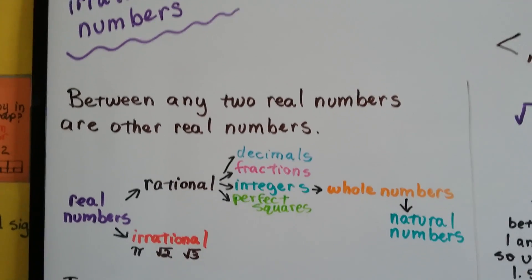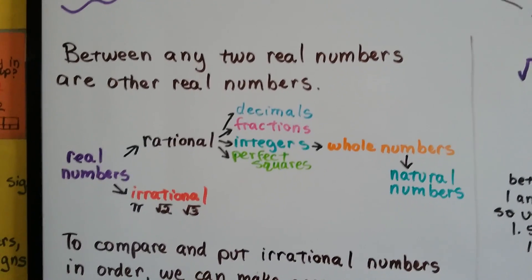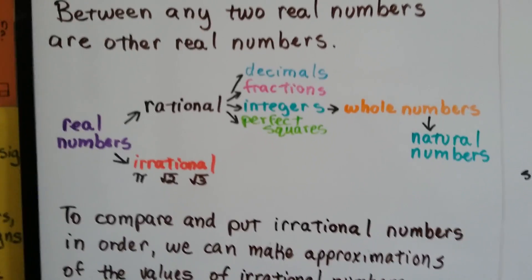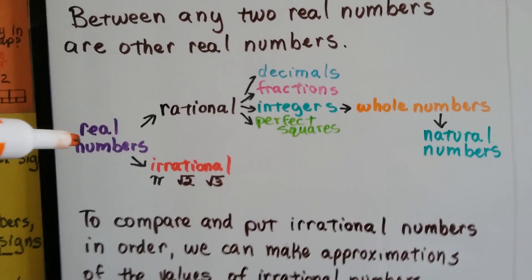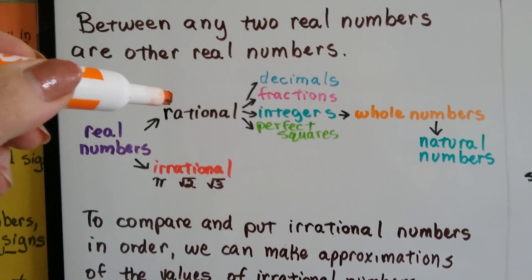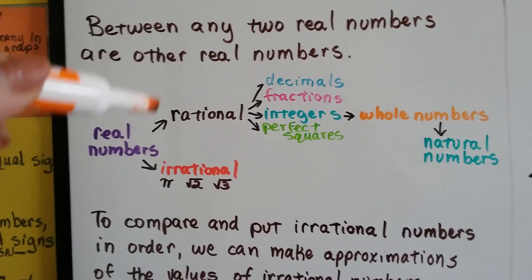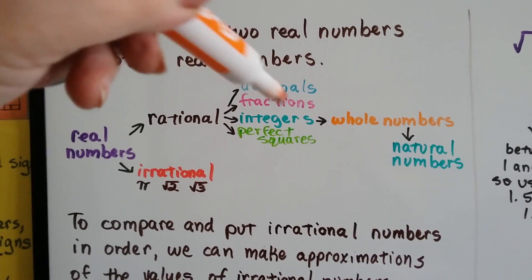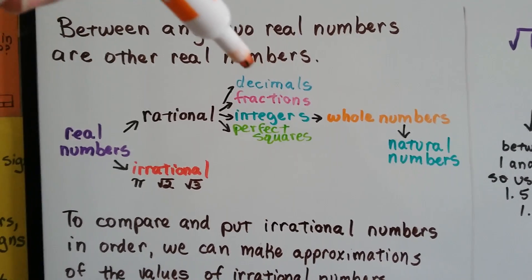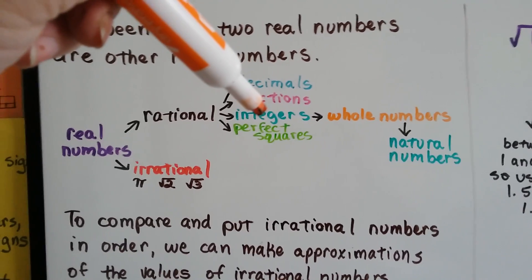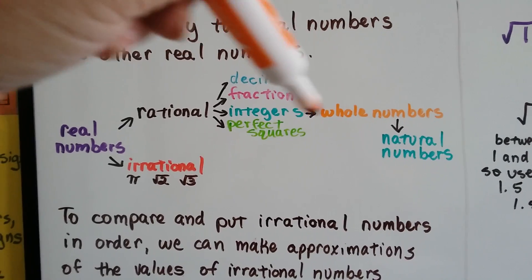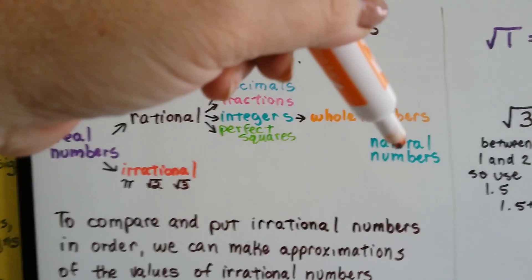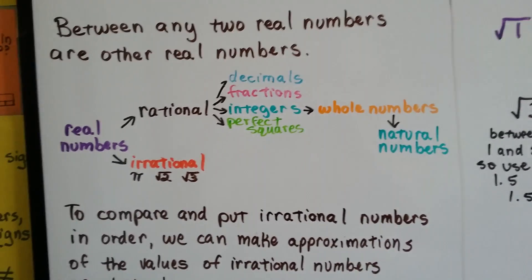Between any two real numbers are other real numbers. As we saw in the last video, we broke it down into a tree. Real numbers are either rational or irrational. The rational numbers have branches broken off into decimals, fractions, positive and negative integers, and perfect squares. The integers go to whole numbers, and those go to natural numbers.